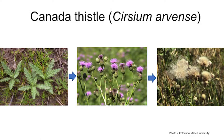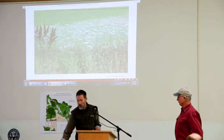For those not as familiar with it, Canada thistle looks different at different times of year. As it emerges in the spring, you'll see rosettes emerge from the ground. As the temperature heats up in late spring and early summer, the plant will bolt and begin to flower. Then going into late summer and early fall, it sets seed and starts to look like the image on the right.